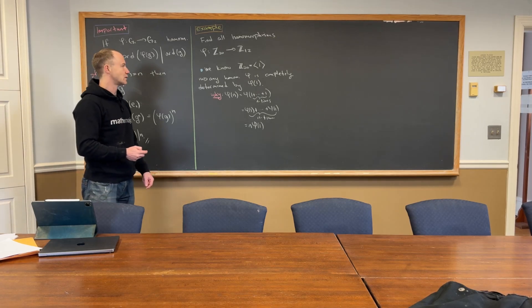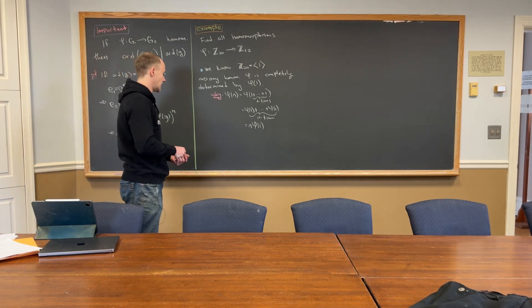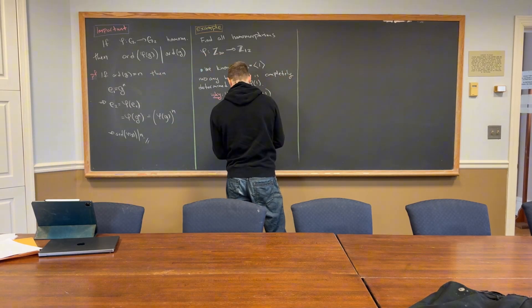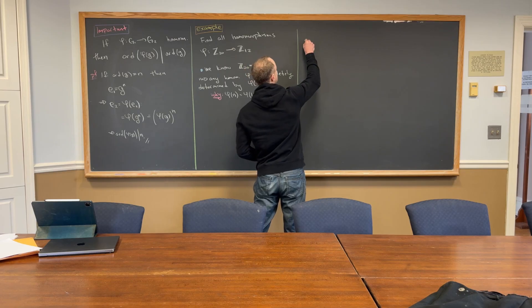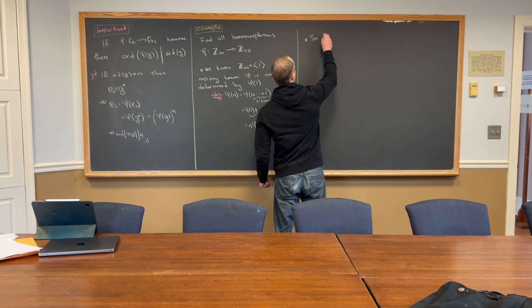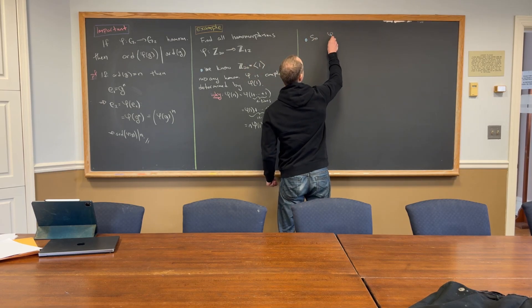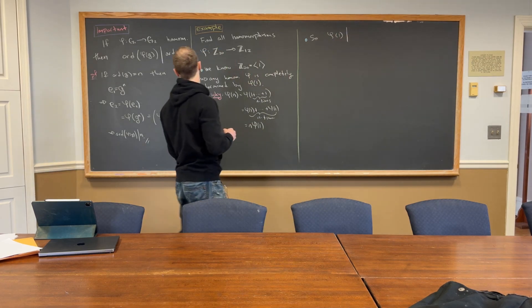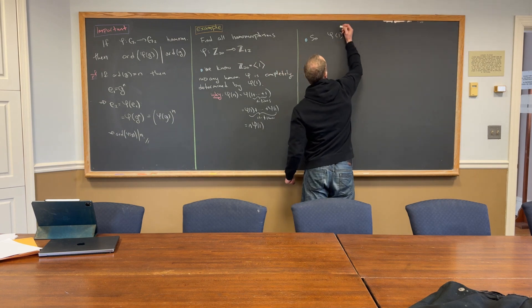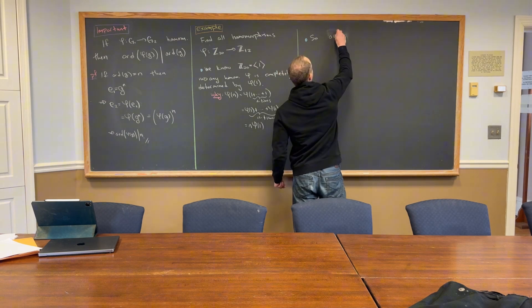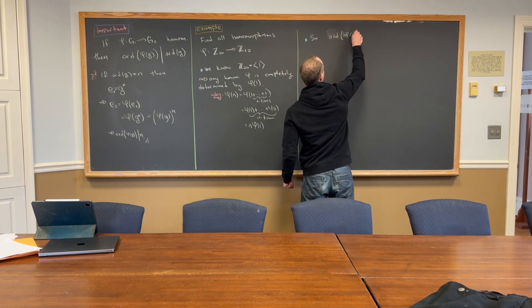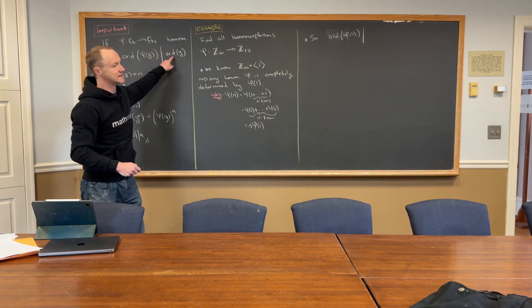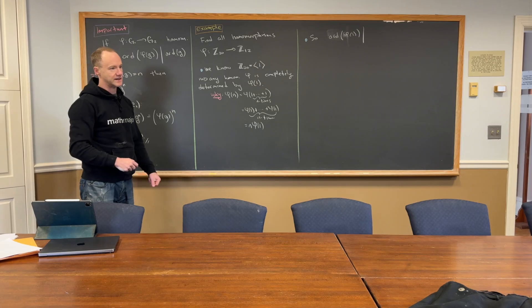Okay, so that's what we know. And then, I guess, now we want to use this little numerical trick that we have over here. So, in our case, phi of one has to divide, sorry, not phi of one, the order, so the order of phi of one has to divide the order of one in Z20.